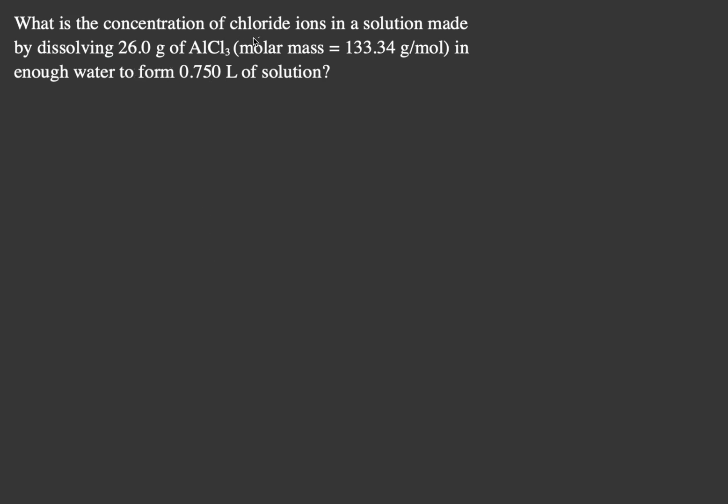This question asks about the concentration of chloride ions in a solution made by dissolving 26 grams of aluminum chloride in enough water to form 0.75 liters of solution. We're finding the molarity of chloride ions - that's what concentration means.